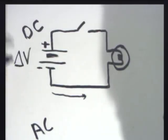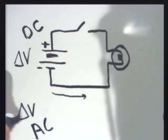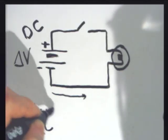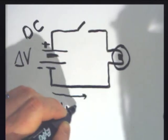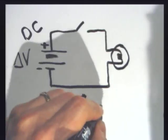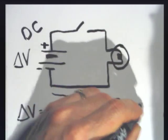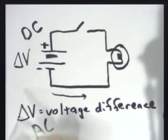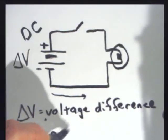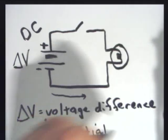The potential difference, or delta V. So delta V stands for voltage difference, and that's also known as potential difference. And it doesn't matter whether it's AC or DC. That's true for both. The bigger the potential difference, the faster the electrons are going to want to move.